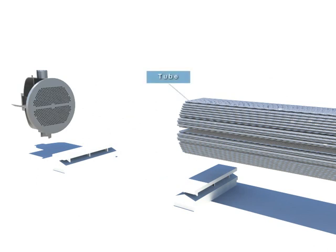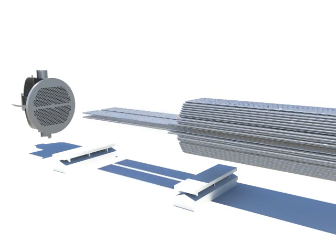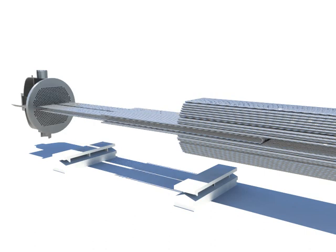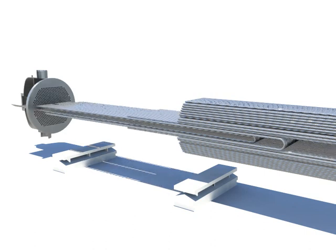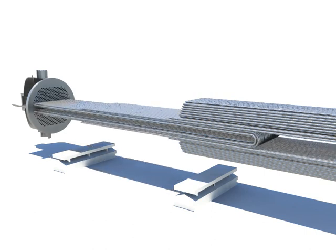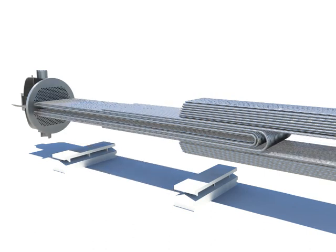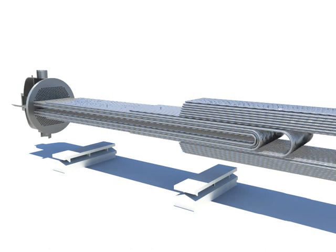The tube is a U-type tube through which feedwater flows, exchanging heat with steam that flows on the outside of the tube through the steam inlet.